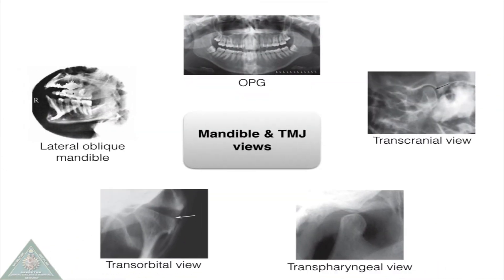Mandible and TMJ views comprise of the lateral oblique mandible view, transorbital view, transpharyngeal view, transcranial view, and the OPG or panoramic radiograph.